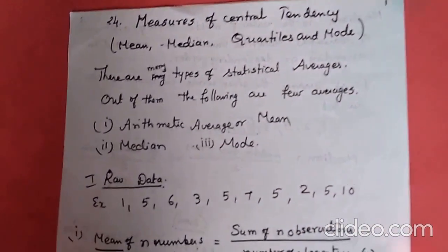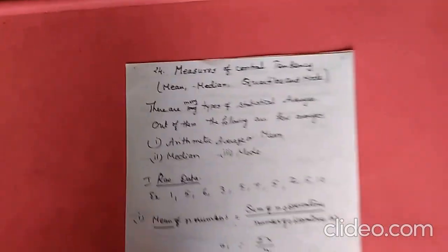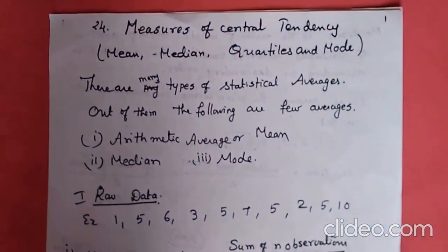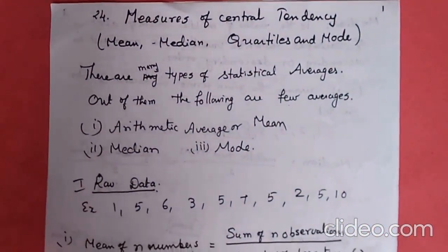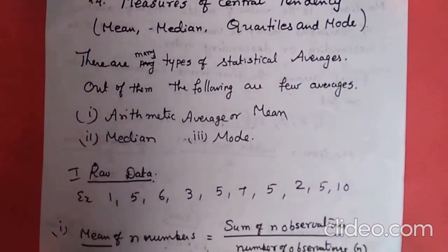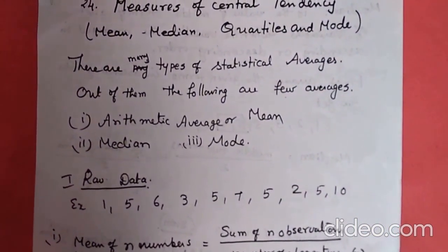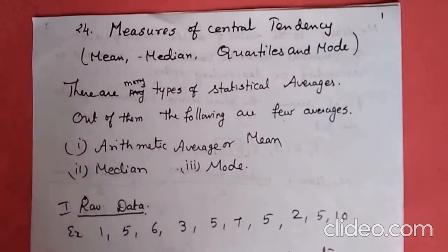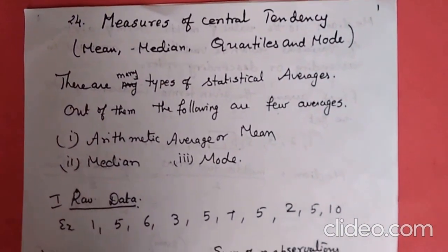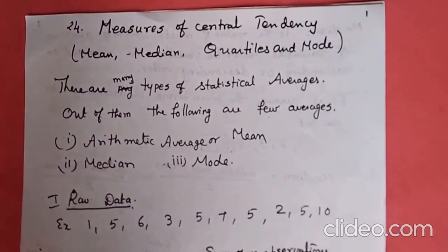There are many types of statistical averages. Out of them, for you, only a few averages: one is arithmetic average or mean, second one median, third one is mode. In this chapter, you are going to learn these three in different types of data.